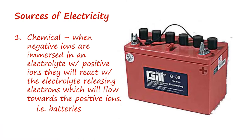One way of generating a voltage and electrical current is by a chemical reaction. In a charged battery there are positive ions on one side of a separator and negative ions on the other. Once a conductive path is established between the two sides, electrons will flow from the negative side to the positive side. This flow of electrons is an electrical current. Many batteries can be recharged by using a higher voltage to force electrons back to the negative side, re-establishing a potential difference between the two sides.